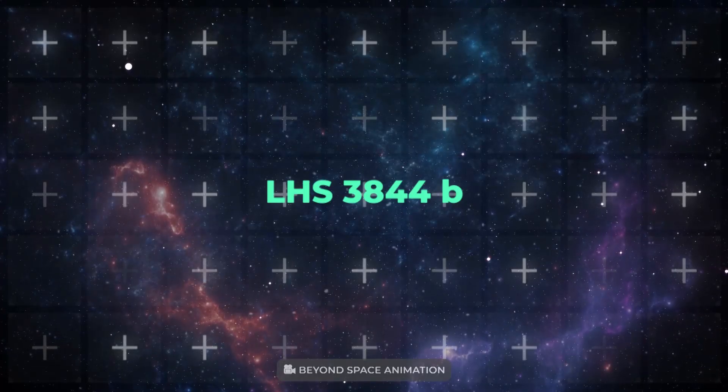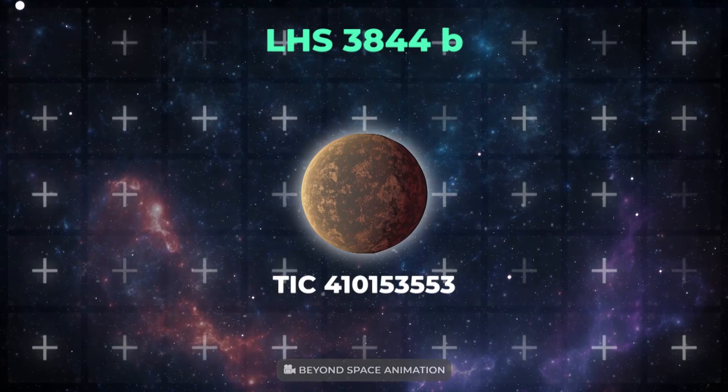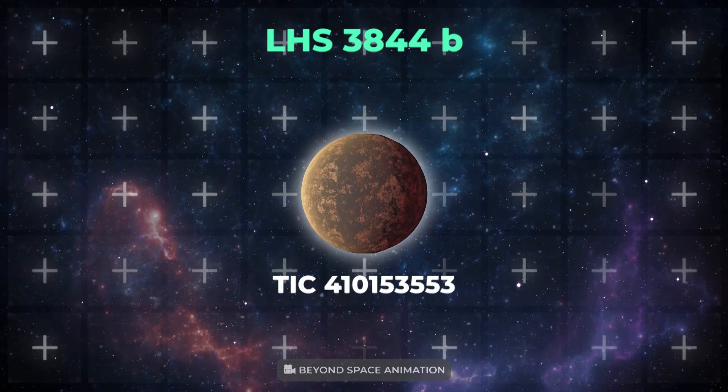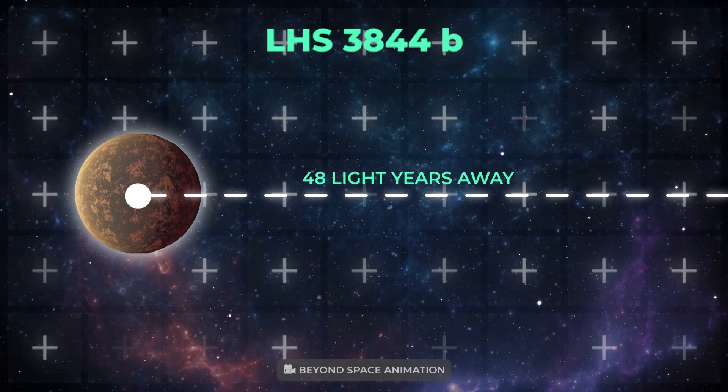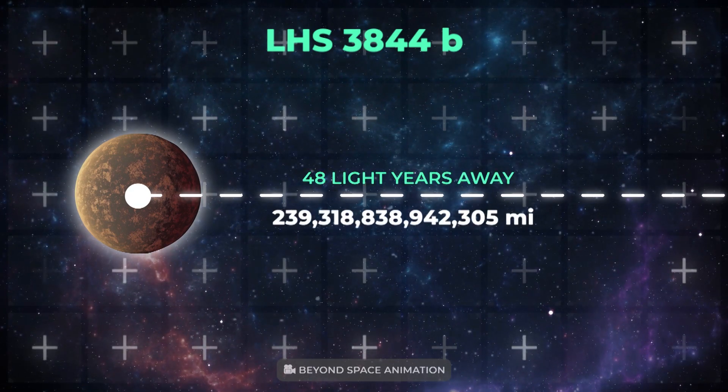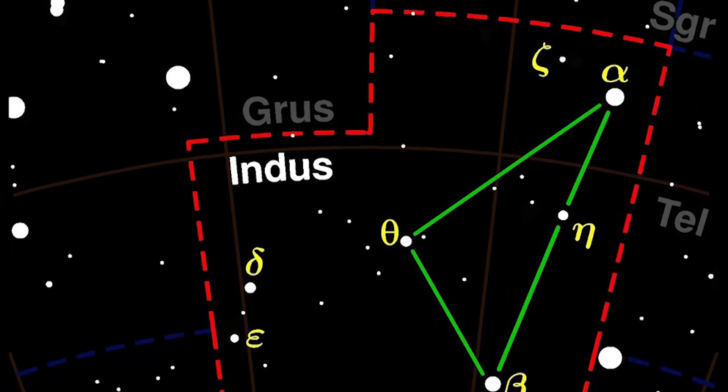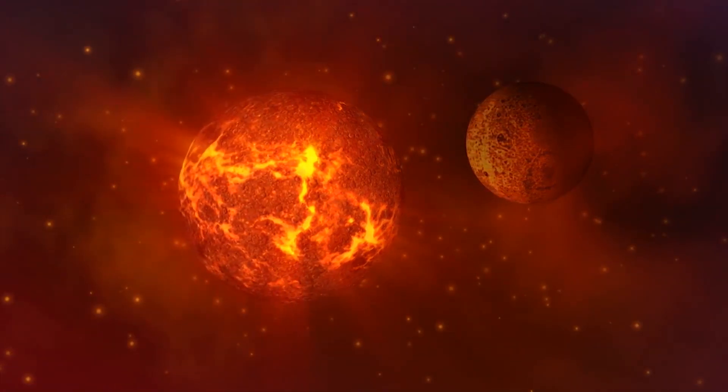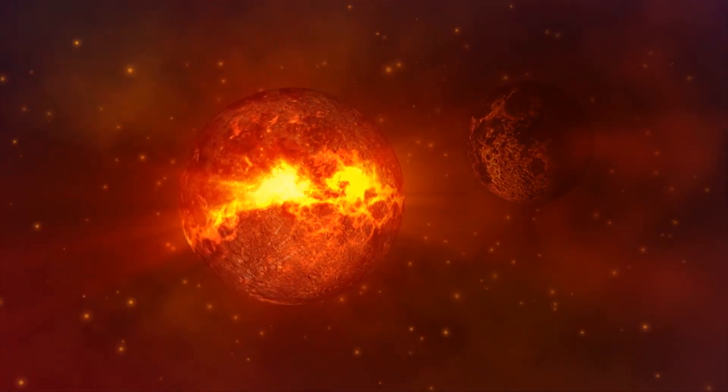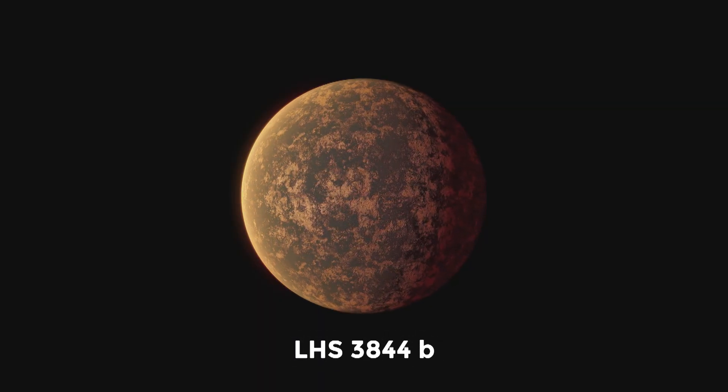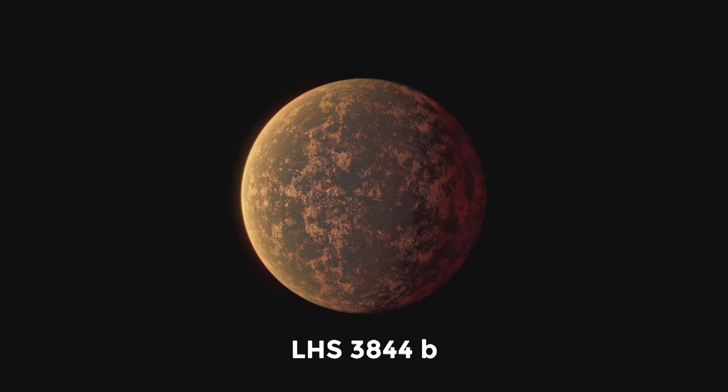LHS 3844b. LHS 3844, also known as TOI-136, is a red dwarf star located 48 light-years or 282,624 billion miles from Earth in the constellation of Indus. While 55 Cancri e will provide insight into the exotic geology of a world covered in lava, LHS 3844b affords a unique opportunity to analyze the solid rock on an exoplanet surface.